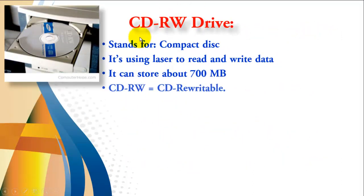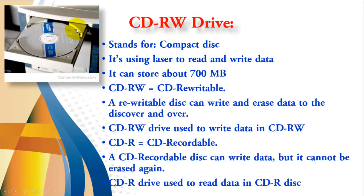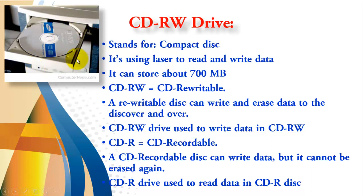The second device is called a CD-RW drive, which stands for rewritable. This is the device and this is the disk — you can see 'CD-RW' or 'rewritable' on it. CD stands for compact disk. It uses laser technology to read and write data. It can store up to 700 MB. The drive is called CD-Rewritable.